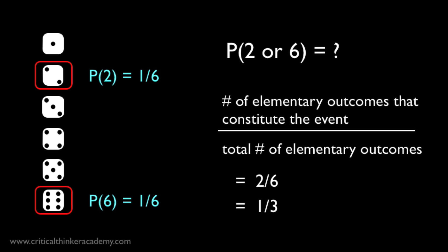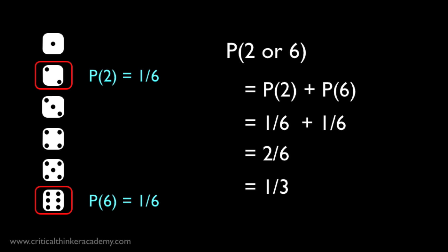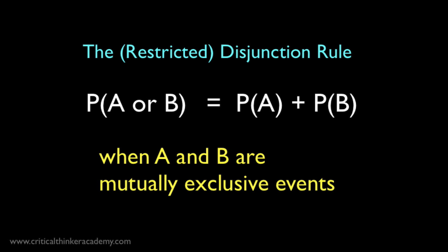The algebraic translation of this reasoning is straightforward. What you're doing is adding the probabilities of the individual outcomes. So the probability of getting a 2 or a 6 is equal to the probability of getting a 2, added to the probability of getting a 6, which is 2 in 6, or 1 third. And this is our rule.